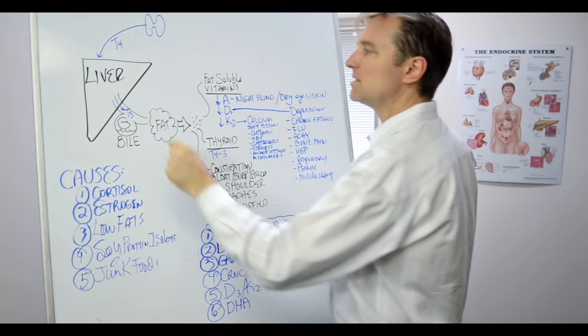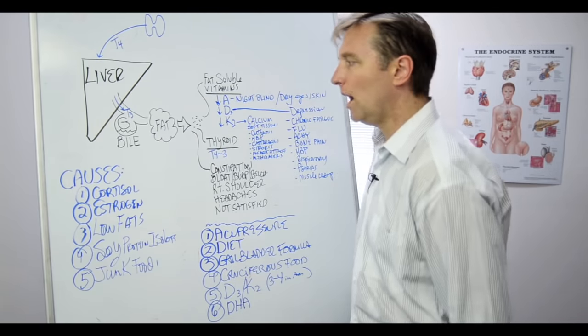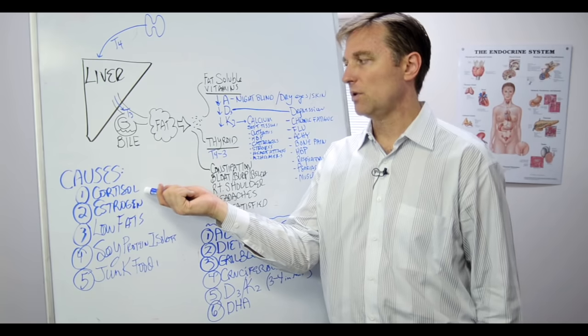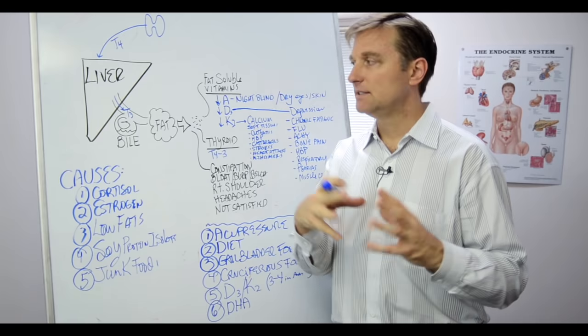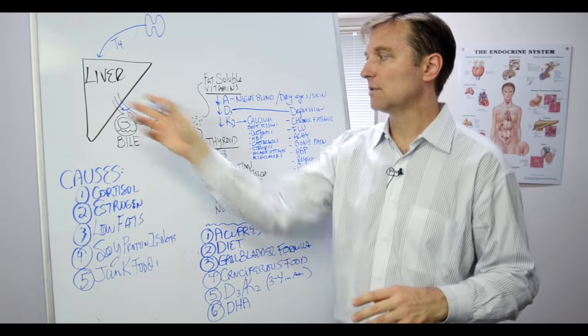Okay. So now what would be the cause of a bile problem? One is high levels of cortisol. That's from the adrenal. That's a stress hormone. So stress can shut down your bile ducts. And that's the duct that comes through here.